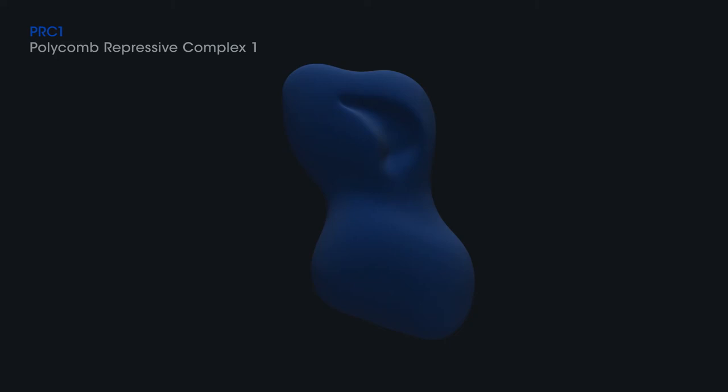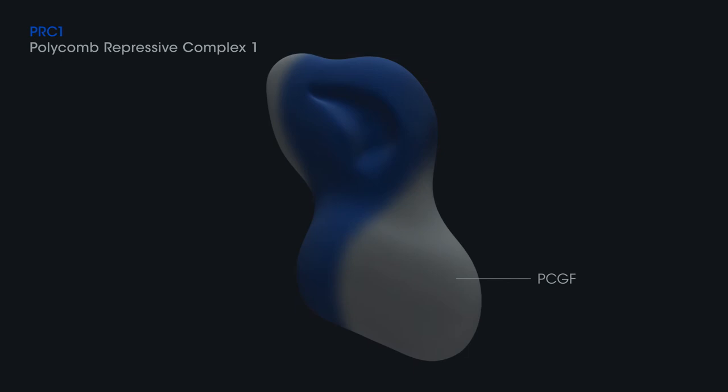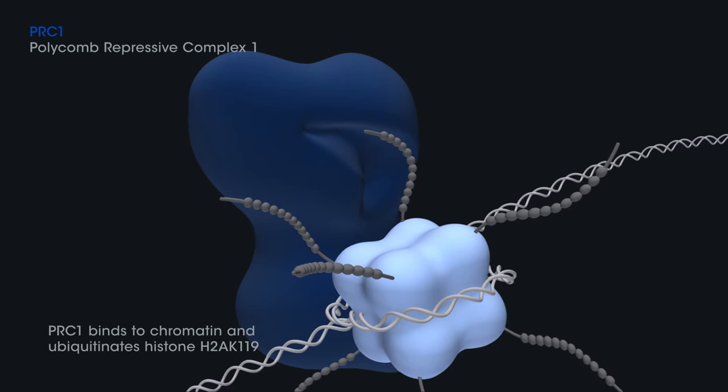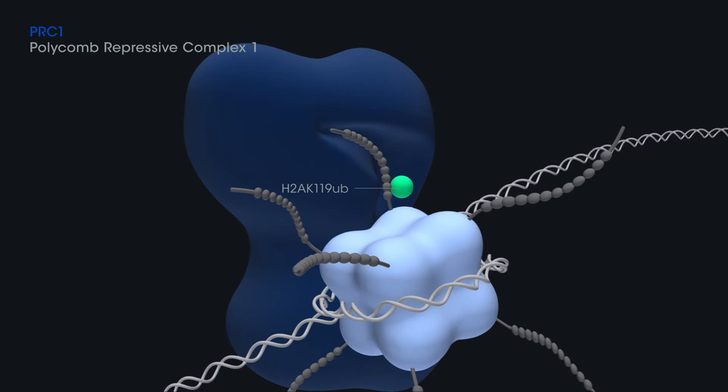PRC1, another polycomb complex, includes a catalytic component E3 ubiquitin ligase RING1 and a PCGF. PRC1 complex binds to chromatin and the RING protein ubiquitinates histone H2A at the position K119.